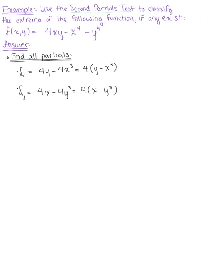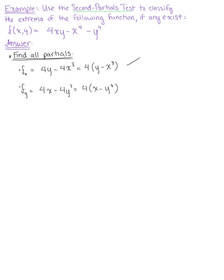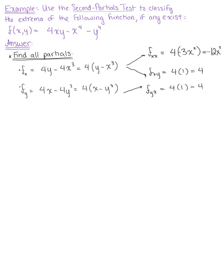We'll use these first order partials for finding potential critical points, and then we'll find the second order partials. The second order partial of x with respect to x is 4 times negative 3x squared, which gives us negative 12x squared. The second order partial of x with respect to y gives us 4 times 1, or just 4. Using our partial derivative with respect to y, the second order partial of y with respect to x is again 4. Taking the second order partial of y with respect to y, we have 4 times negative 3y squared, which gives us negative 12y squared.